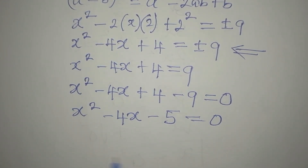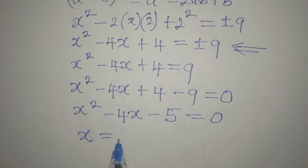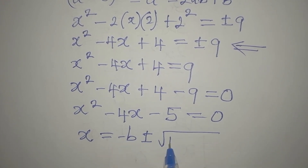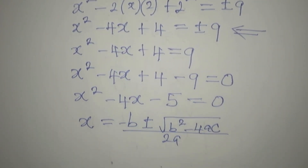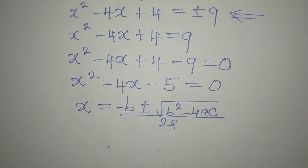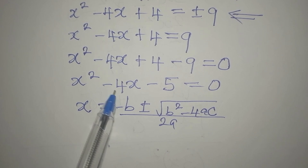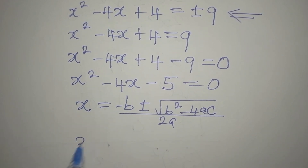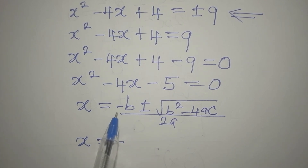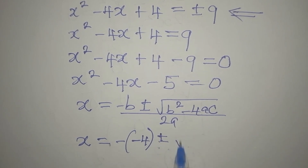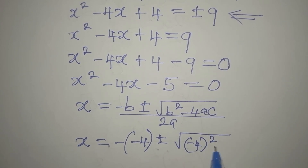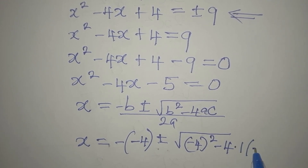We always use the quadratic formula: x equals minus b plus or minus square root of b squared minus 4ac, all over 2a. Here a is 1, b is minus 4, and c is minus 5. So x will be minus negative 4, plus or minus the square root of negative 4 squared minus 4 times 1 times negative 5, divided by 2 times 1.